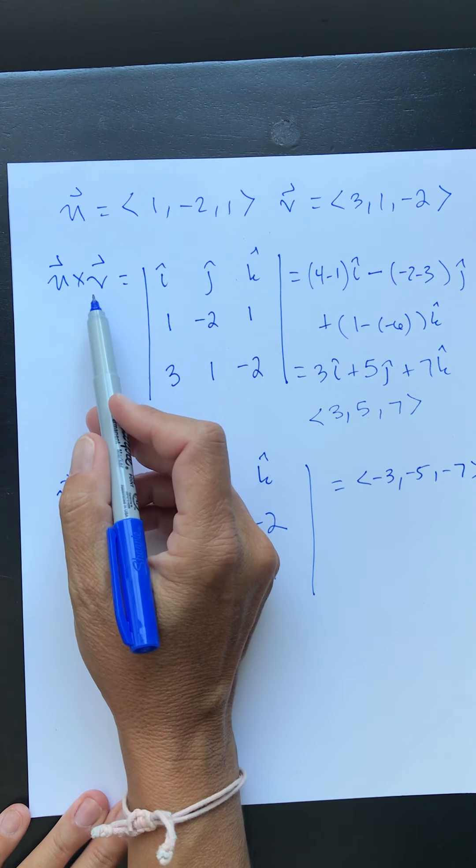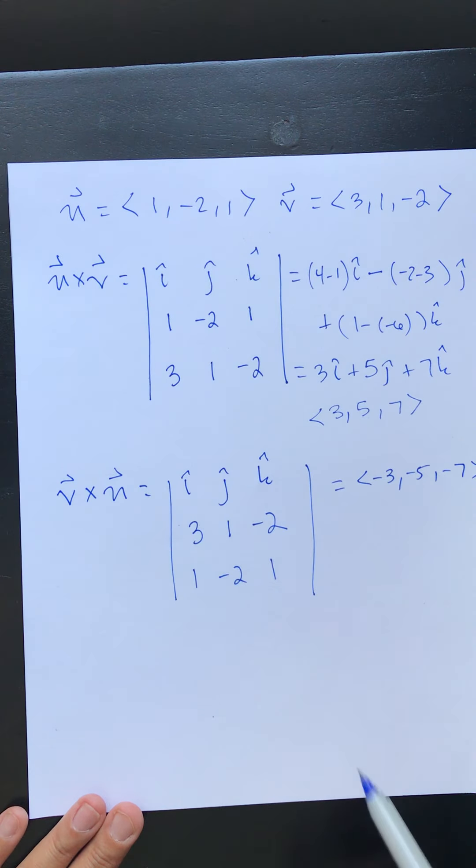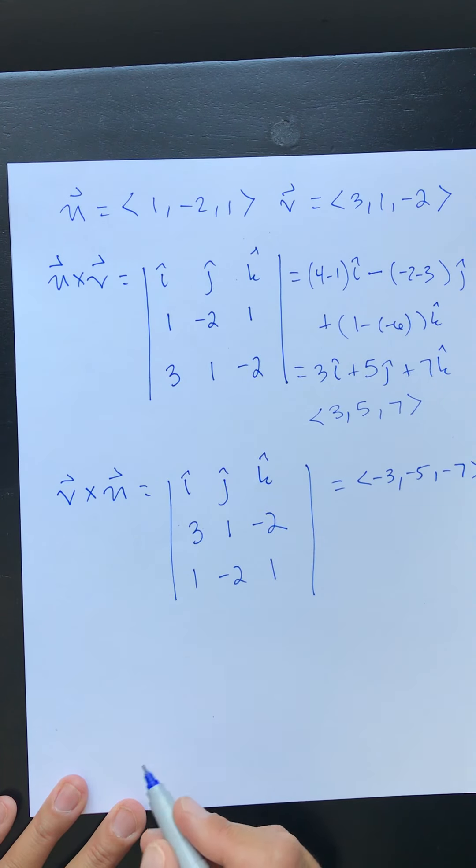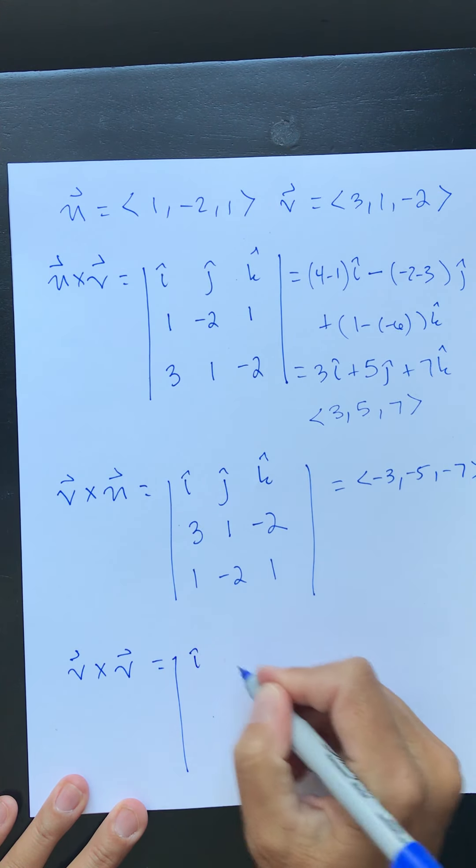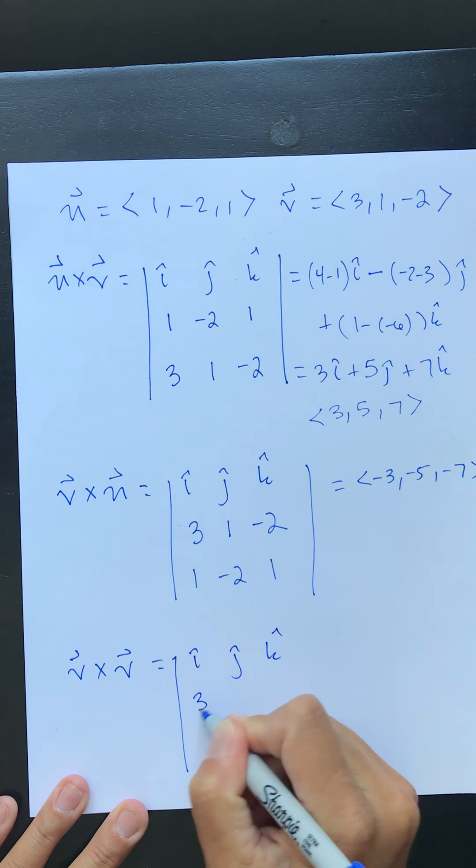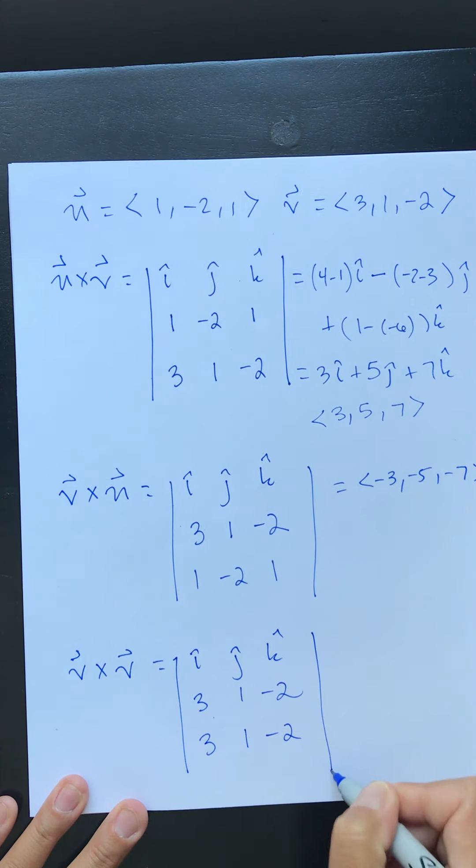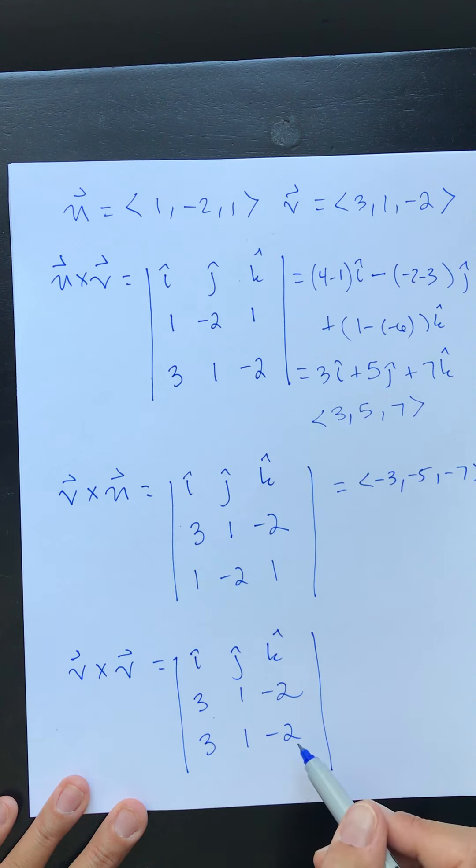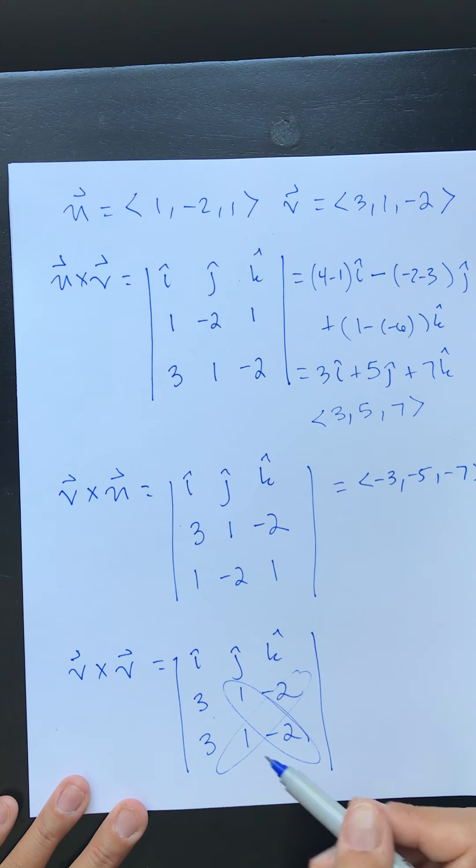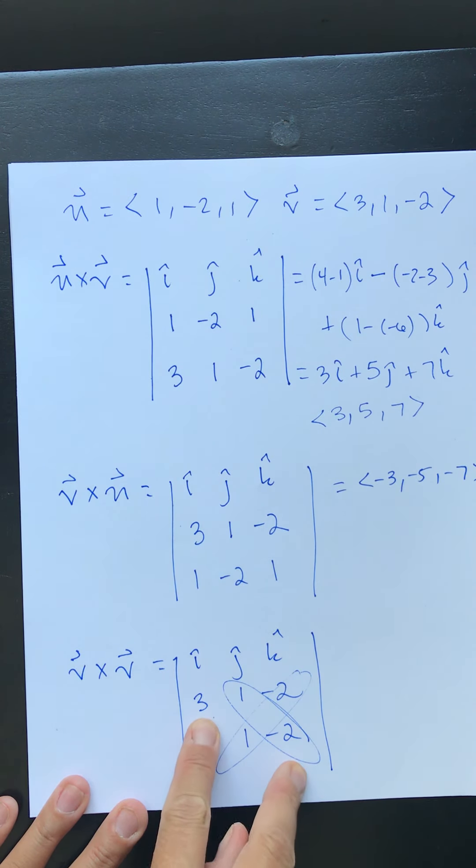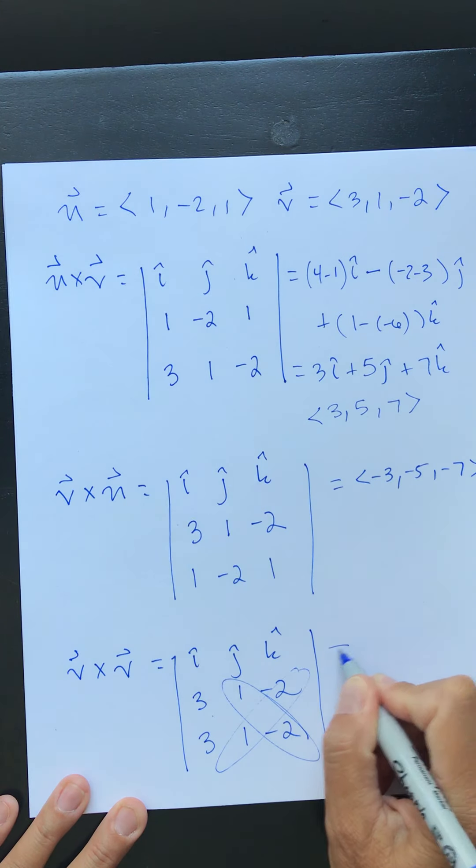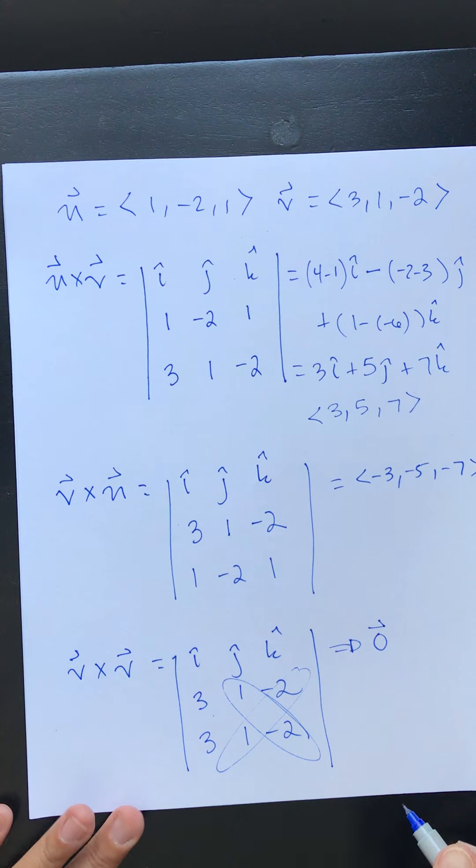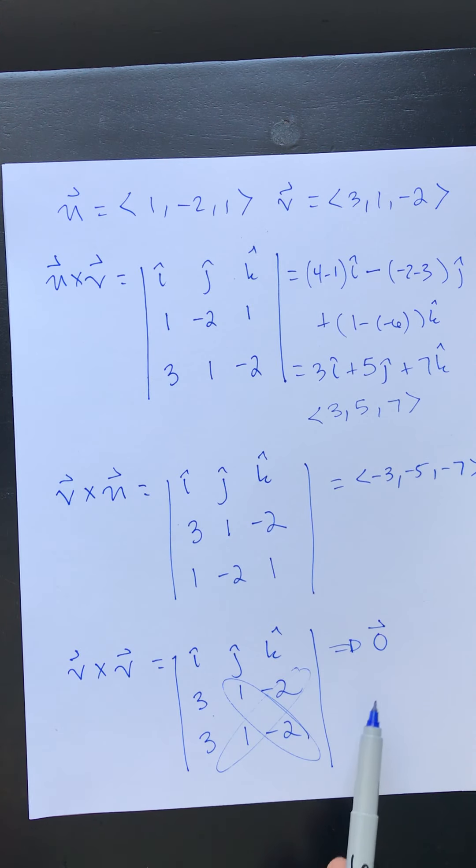The last one I want you to find is v cross v. So in here we're going to have i hat, j hat, k hat, 3, 1, -2, 3, 1, -2. Right away just looking at our i hat component we can see that negative two minus negative two is going to be zero. For our j hat, negative six minus negative six is going to be zero. Anytime you cross a vector with itself it always gives you the zero vector. Again we're talking about vectors, so the cross product always yields a vector, and if you cross the vector with itself you will always get the zero vector.